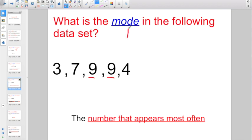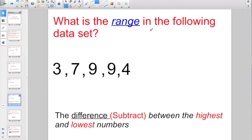And the range in the data set, the difference, meaning the answer when you subtract between the highest number, which is a 9, and the lowest number, which is a 3. What is going to be 9 minus 3? 9 minus 3, and hopefully everybody knows 9 minus 3, that is 6. So, this data set has a range of 6.